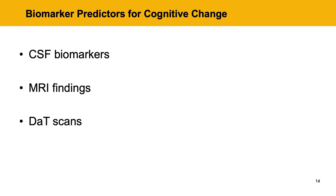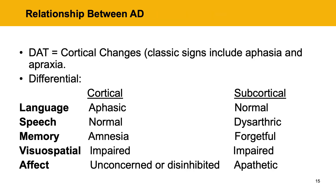Biomarkers, as mentioned earlier — structural images, CSF biomarkers, and DAT scans can predict cognitive change down the line. There's also a distinction between cortical changes, which are typically what we see with Alzheimer's disease, versus subcortical changes, which are typically what we see with Parkinson's disease or Parkinson's plus syndromes.